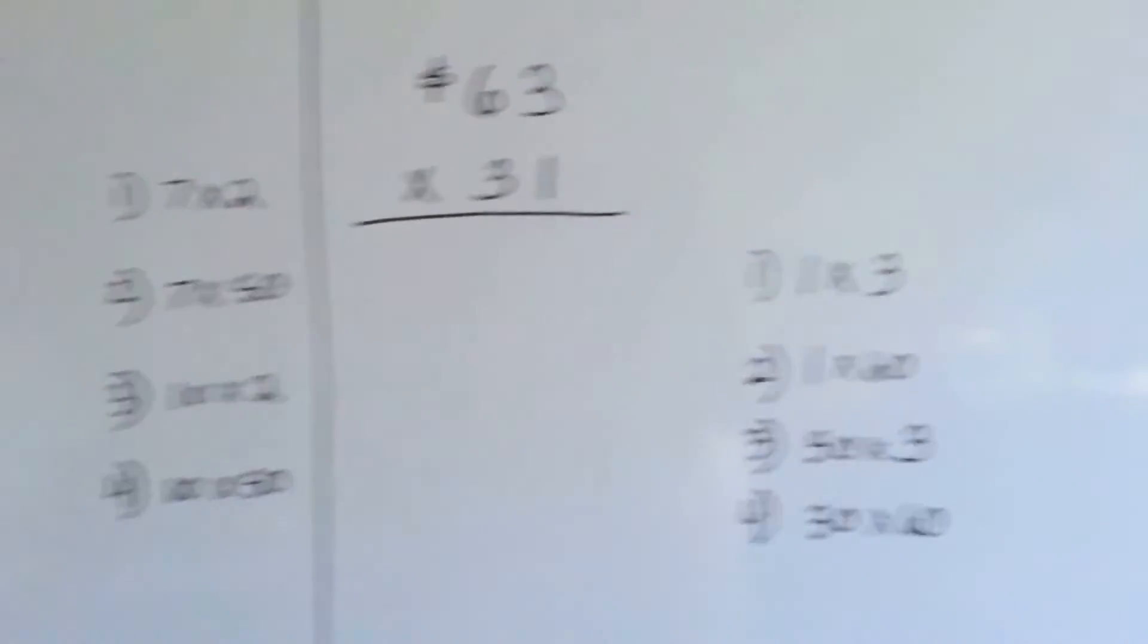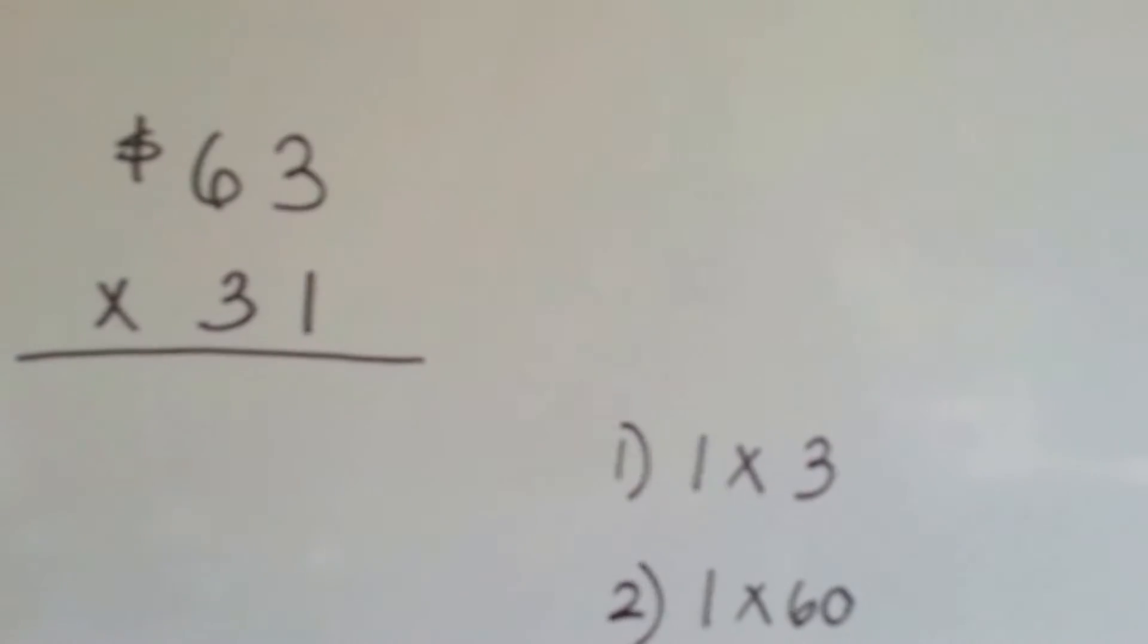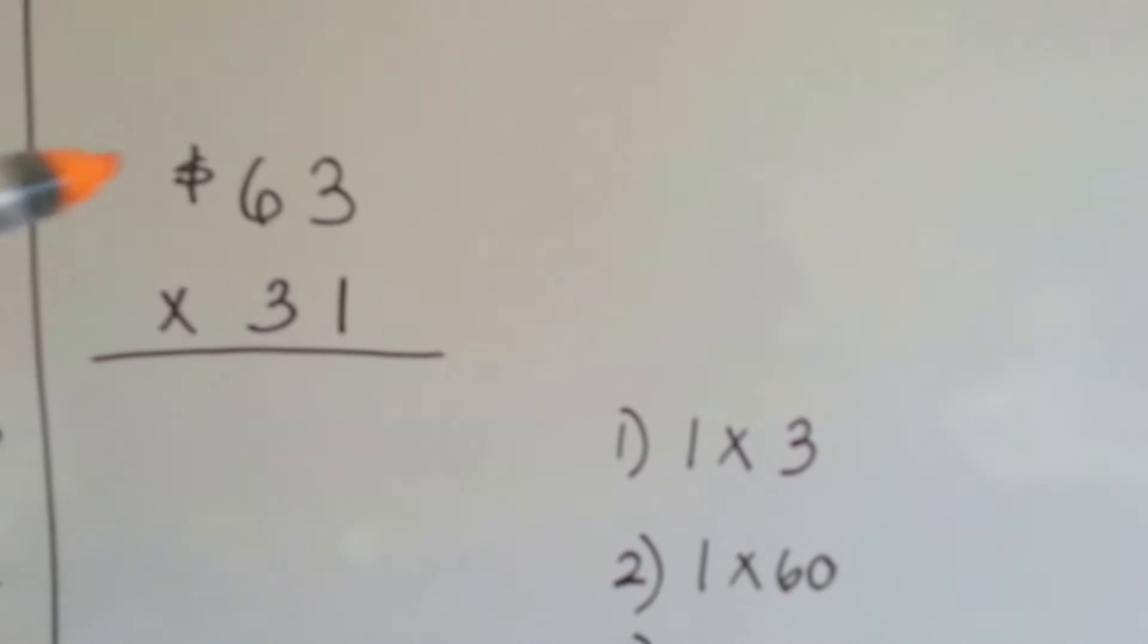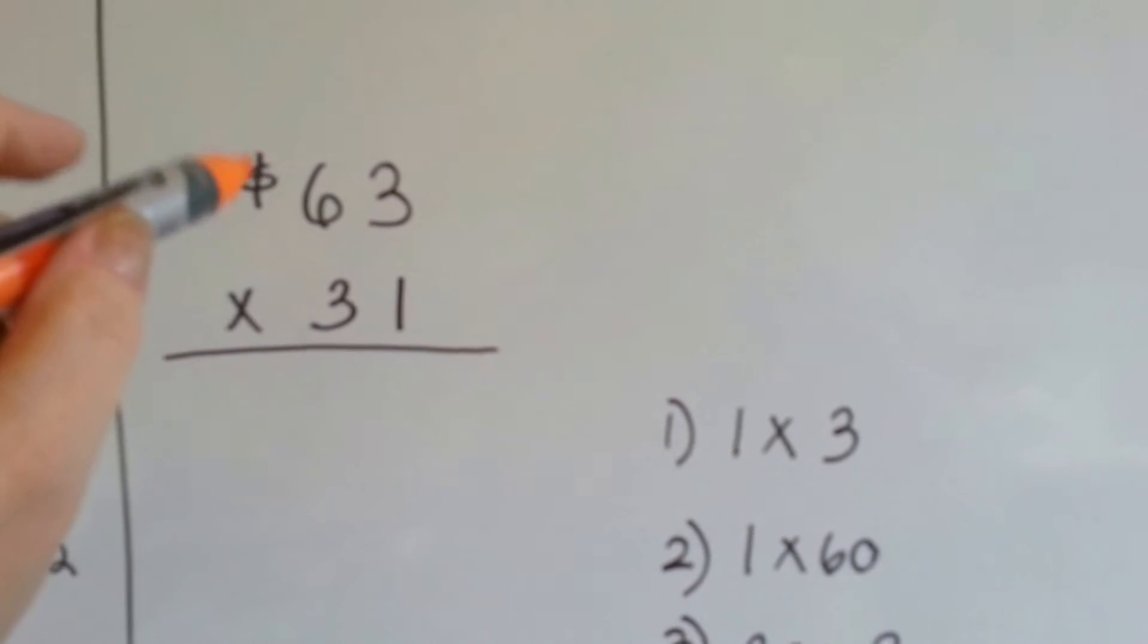Let's try one more time and we'll do it with money. Let's see what we've got here. Now remember when we multiply money, we're going to want to have this dollar sign at the end.